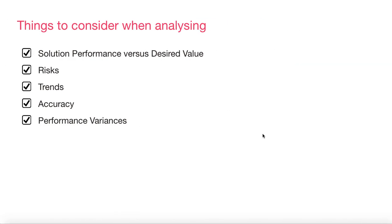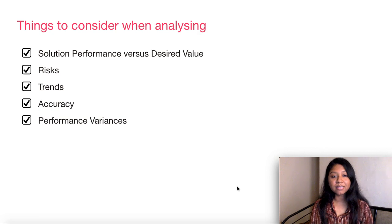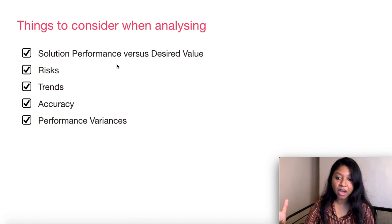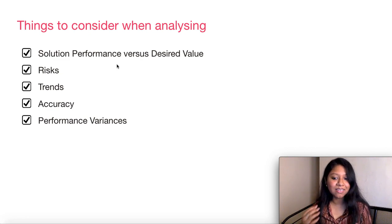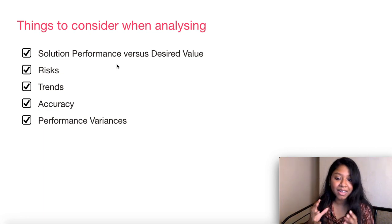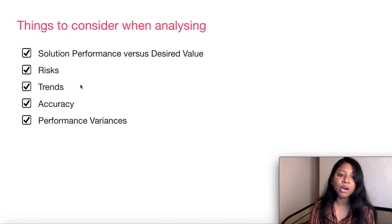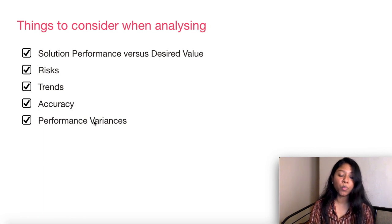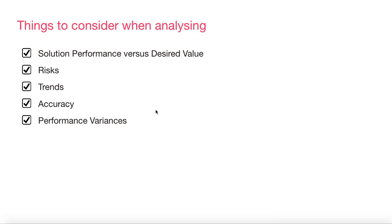When performing the analysis, there are certain things you should consider. The first is solution performance versus the desired value. The second is to look out for any risks. Third, you want to check what trends exist in the data. Fourth, check the accuracy of the performance metric information. And fifth, check for performance variance.